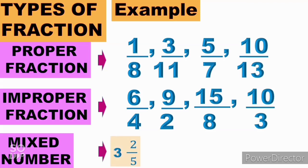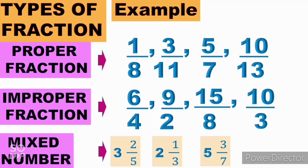For mixed number, we have examples: 3 and 2 fifths, 2 and 1 third, and 5 and 3 over 7. Again, in a mixed number, it is a combination of a whole number and a proper fraction. So 3, 2, and 5 are the whole numbers.